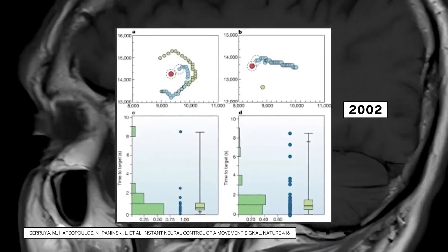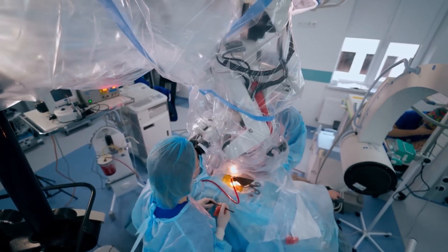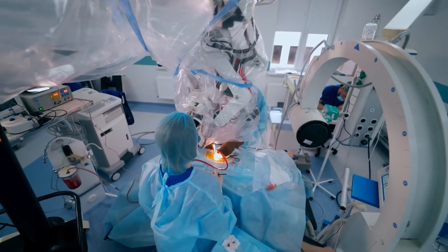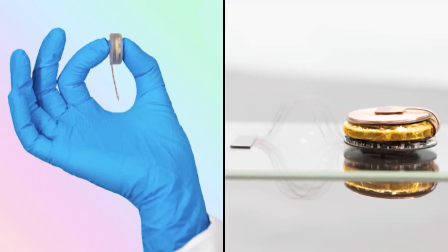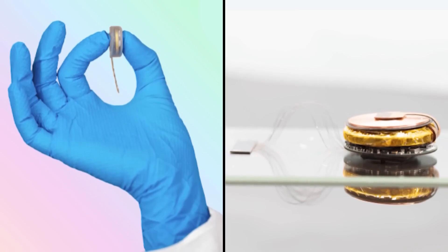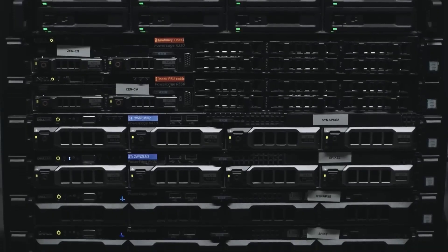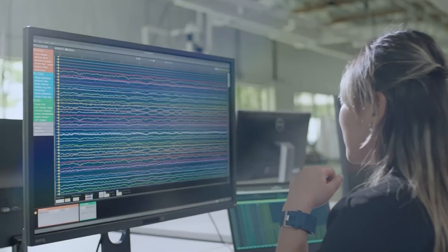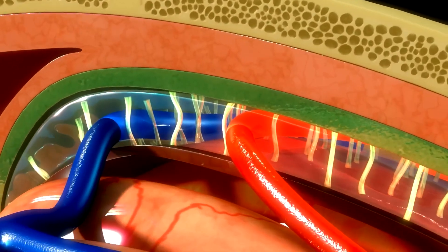Building upon the invaluable insights gained from Arbaugh's pioneering trial, Neuralink proceeded with the implantation of the N1 chip into a second human participant, publicly identified as Alex. Alex's surgical procedure proceeded smoothly, mirroring the efficiency of the first, and he was discharged the day after the implantation.